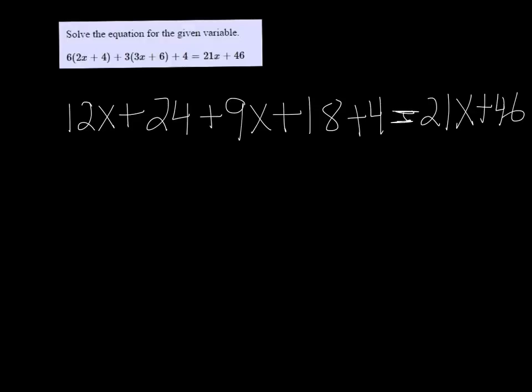Next, you want to combine like terms. The right side is fine, everything's already combined, but I have 12x and 9x. Together they make 21x.